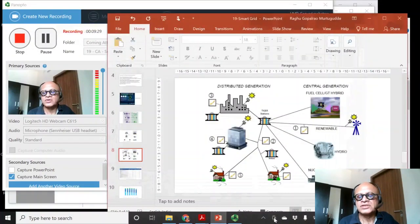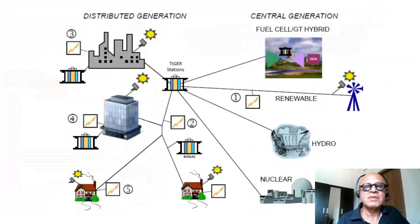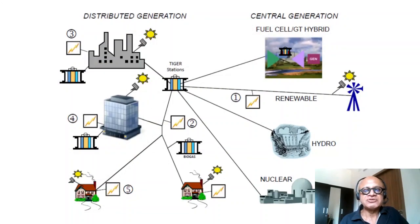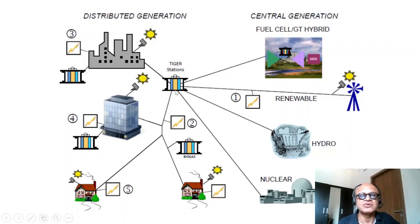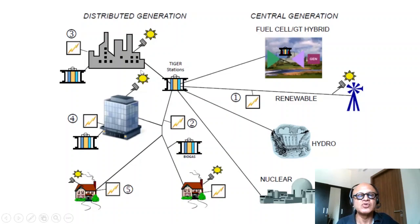TIGER stands for Transmission Integrated Grid Energy Resource — a kind of local grid that can disconnect from the main grid. It includes a storage system like a battery, providing a buffer and supporting both local and grid-level configurations.